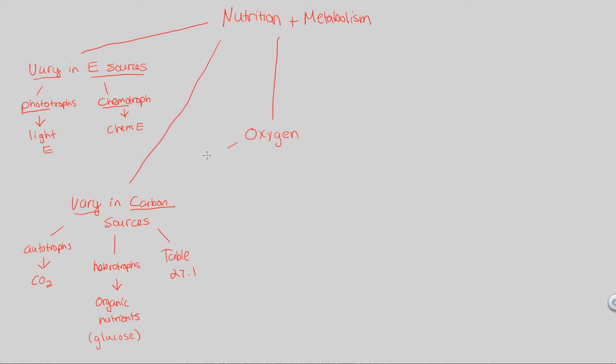Oxygen is utilized by obligate aerobes. These are individuals that absolutely need oxygen. They are obligated to have oxygen and need oxygen in order for them to do their metabolism, in order for them to do something like cell respiration. So these are individuals that need it, absolutely need it, thus the name obligate aerobes.